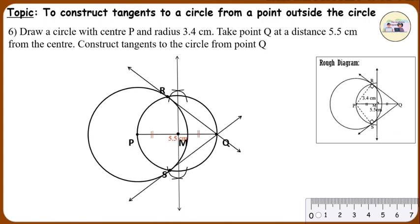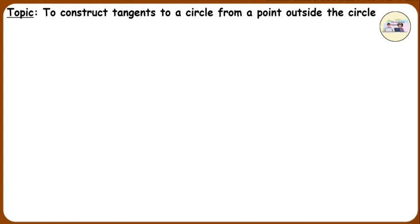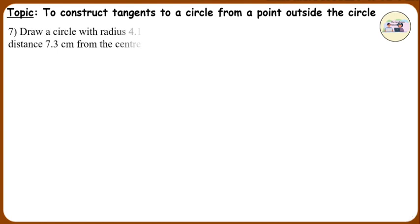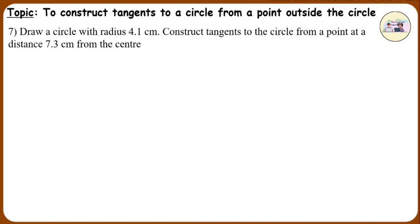Draw line QR and line QS. Lines QR and QS are the required tangents. Question number 7: Draw a circle with radius 4.1 cm. Construct tangents to the circle from a point at a distance 7.3 cm from the center.